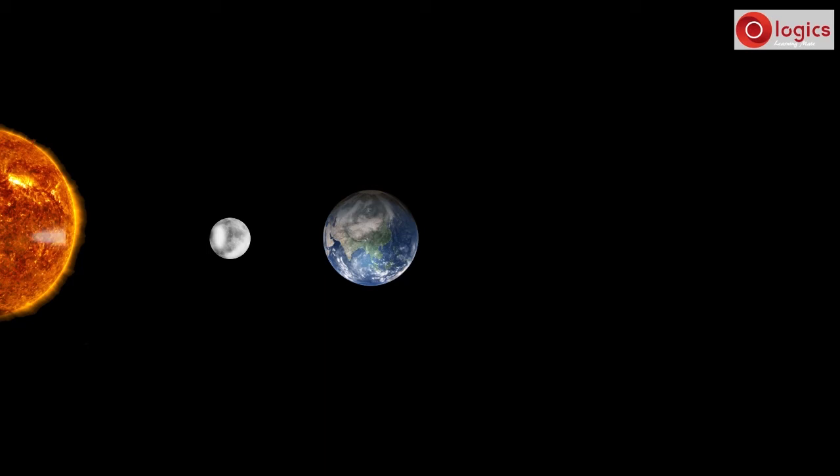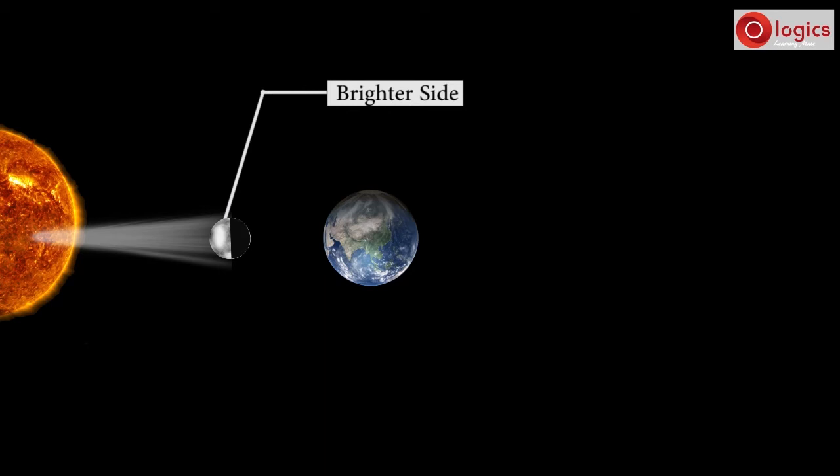Sun rays fall on this side, so it is the brighter side of Moon. Sun rays do not fall on this side, so it is the darker side of Moon.